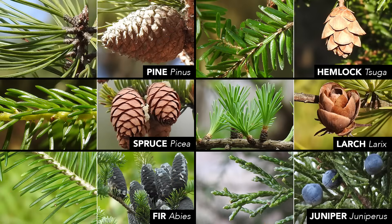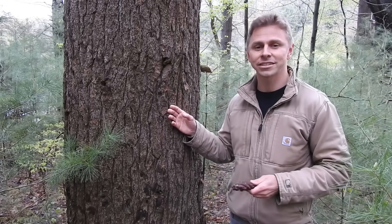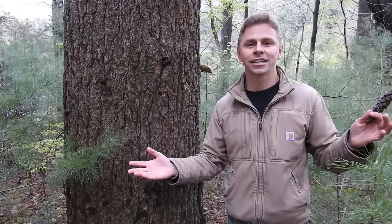Looking at all the cones together, we see that a few resemble one another, but when we consider both the cones and the leaves of a particular genus, these two features really help us achieve a positive genus ID. One viewing of this video is probably not enough to retain all this information, so I encourage you to watch it a few times. Leaves and seed cones aren't the only differentiating features — bark and habitat are also good features — but together leaves and cones can help you narrow down your ID to the genus: pine, spruce, fir, hemlock, larch, and juniper.